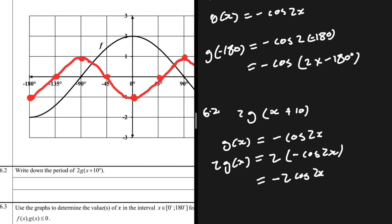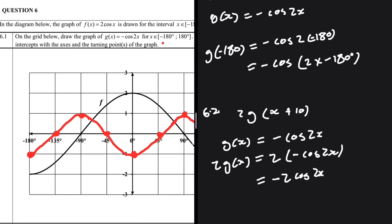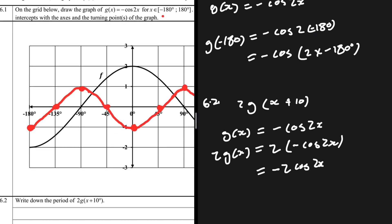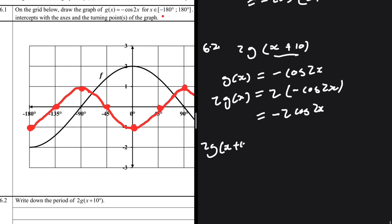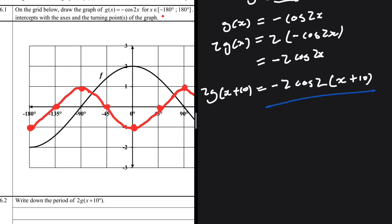From there we replace x with (x + 10), so 2g(x + 10) = -2cos(2(x + 10)). We need to determine the period of this function. The period equals 360 divided by the coefficient of x inside the cosine, which is 2. So the period is 360 ÷ 2 = 180 degrees.